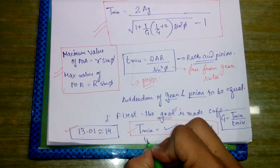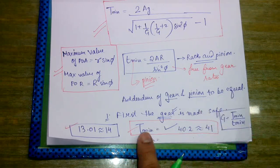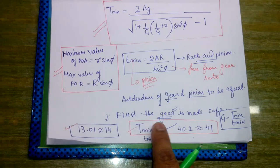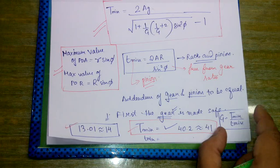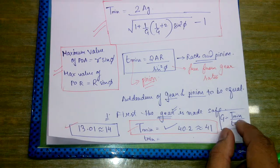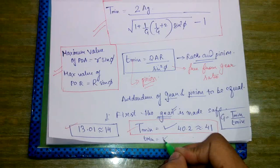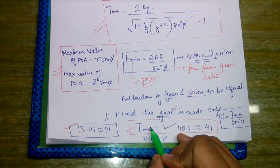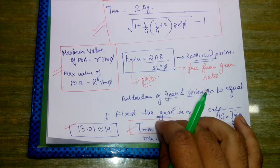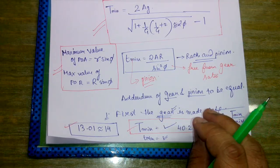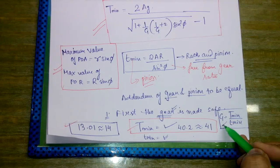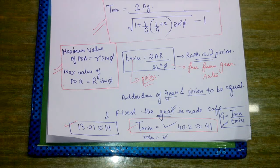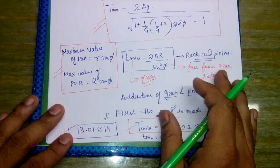To find T minimum for the pinion, we will not apply the T minimum formula again. First calculate T minimum for the gear, then use the gear ratio formula G equals T minimum divided by t minimum to find the minimum number of teeth on the pinion. Key points to remember: if the gear is safe then the pinion is automatically safe; maintain the gear ratio.